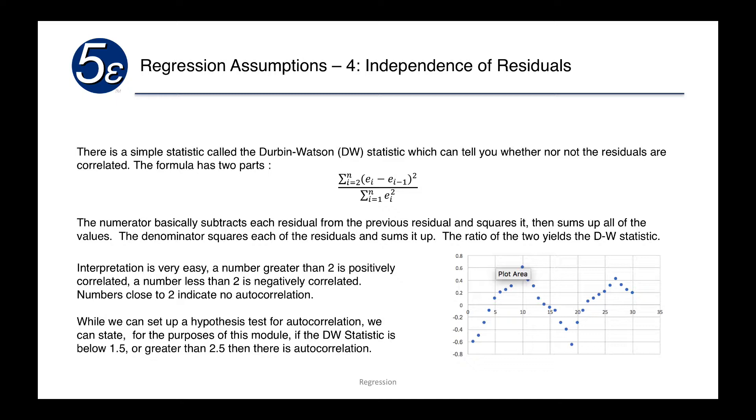What if you have numbers like 1.9 and 2.1? We consider those close to 2. While we can set up a hypothesis test for autocorrelation, we can state for the purposes of this module, if the Durbin-Watson statistic is below 1.5 or greater than 2.5, then we have autocorrelation. We'll need to use time series techniques to solve the issues with autocorrelation.